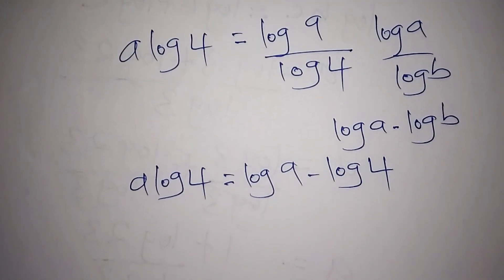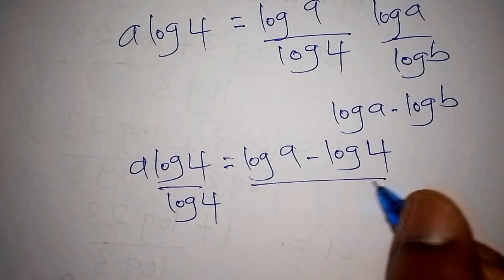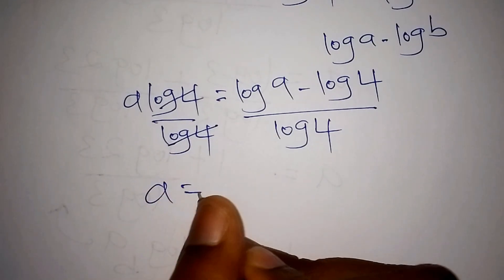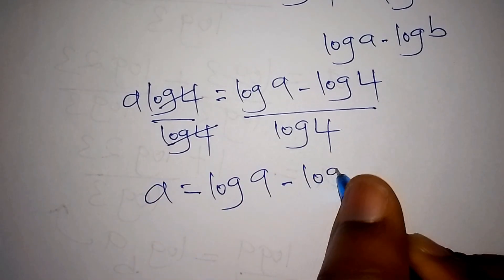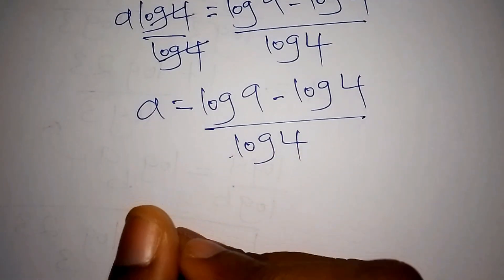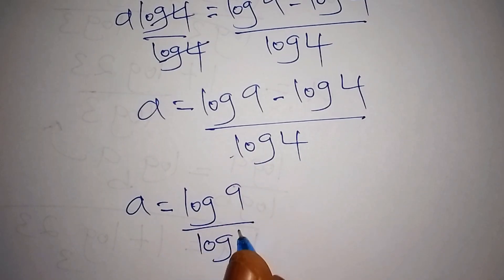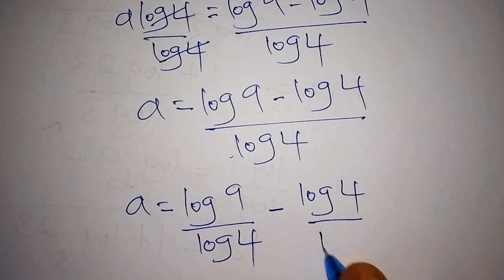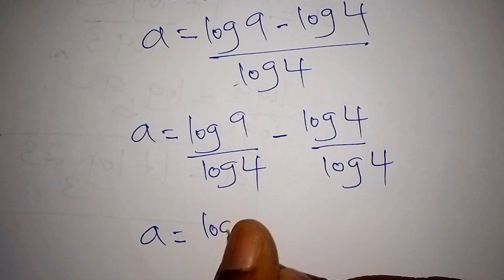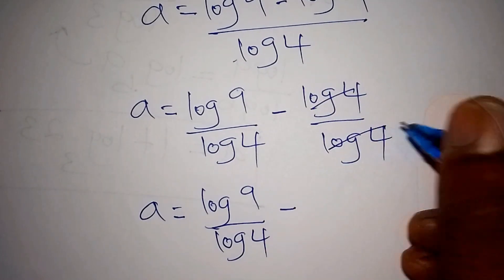The next step is to divide both sides by log 4. The log 4 on the left cancels, giving us a equals log 9 minus log 4, all over log 4. When we split this, a equals log 9 over log 4, minus log 4 over log 4. Since log 4 over log 4 equals 1, we have a equals log 9 over log 4 minus 1.